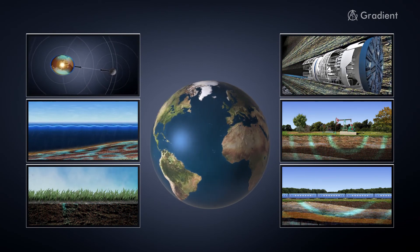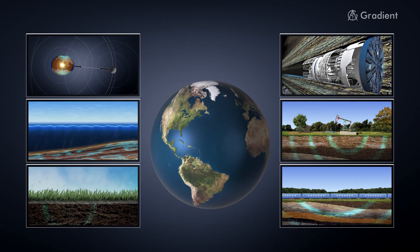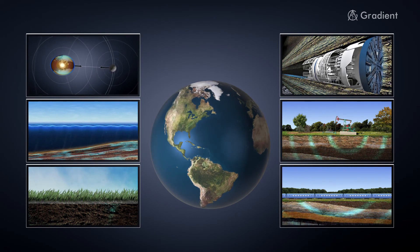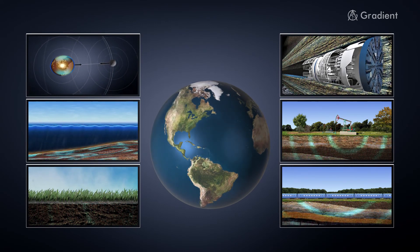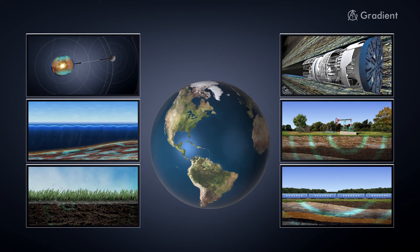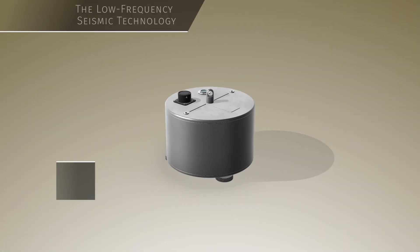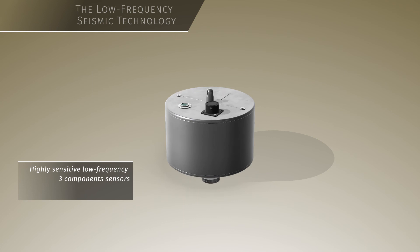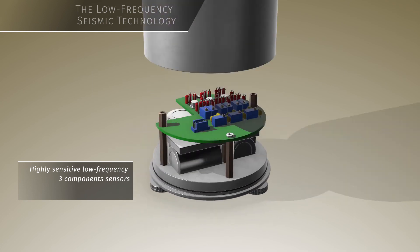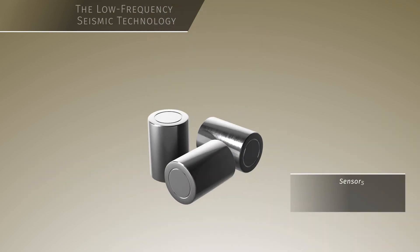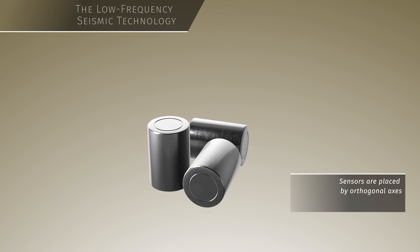The specific features of the background micro-seismic noise include a wide frequency range, low energy level, and unknown location of sources. To record background seismic oscillations when conducting surveys, highly sensitive low-frequency three-component seismometers characterized with a very low noise level are used.